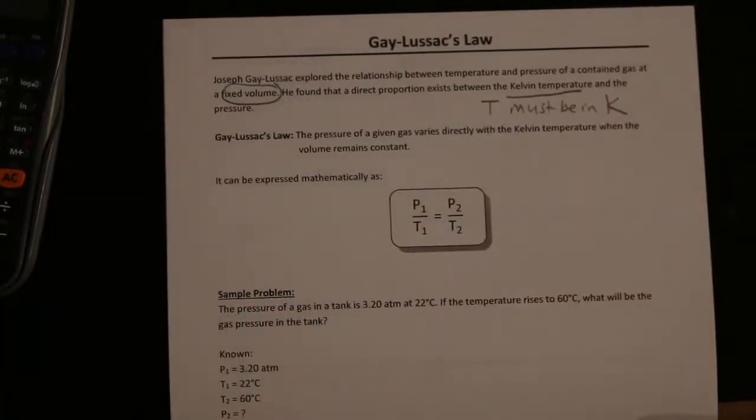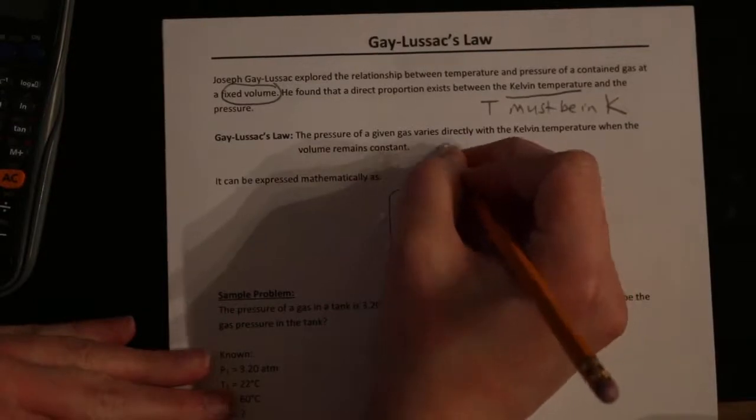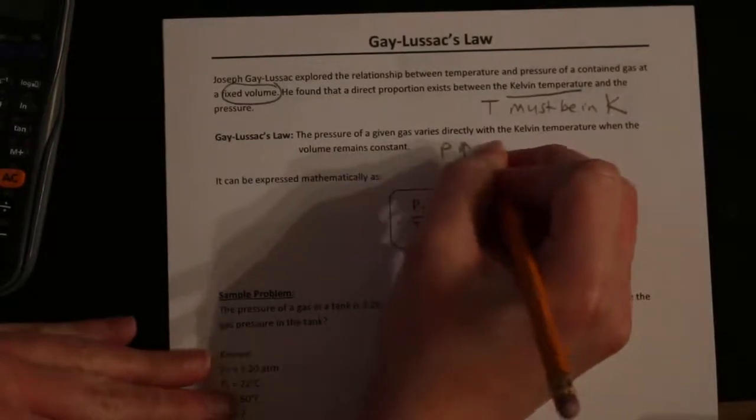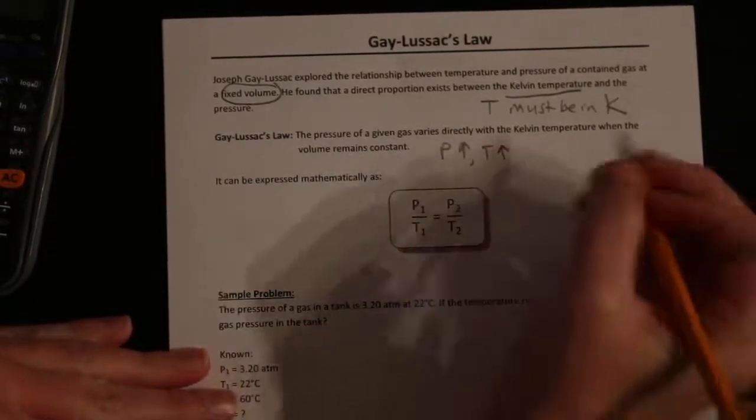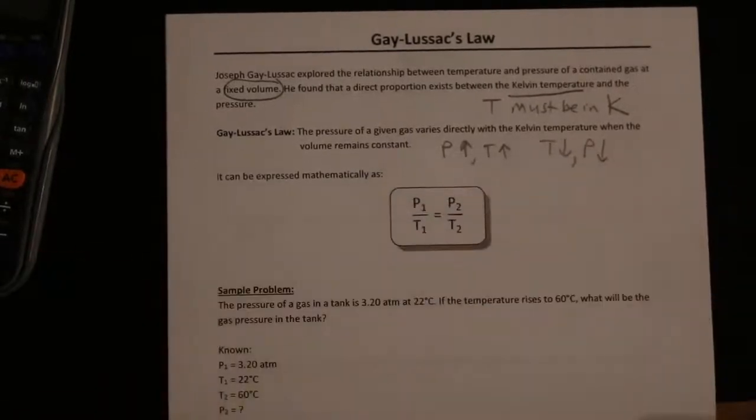Gay-Lussac's law says that the pressure of a given gas varies directly with the Kelvin temperature when the volume remains constant. In other words, pressure is directly proportional to temperature. So that means if pressure goes up, temperature goes up, and if temperature goes down, pressure goes down. They follow each other.